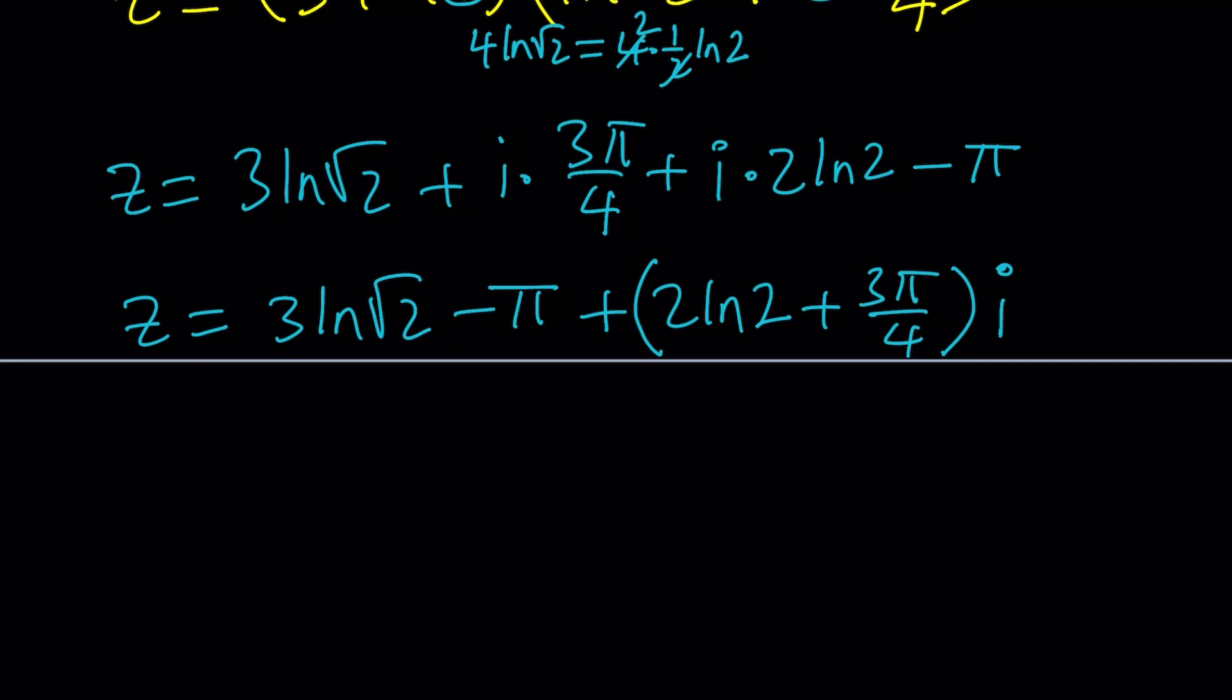So we were able to write this in standard form, or I guess you could call it rectangular form. In other words, this can be called a and this can be called b. So we were able to write z as a plus bi, which is also the name of this channel. So that's pretty much it.